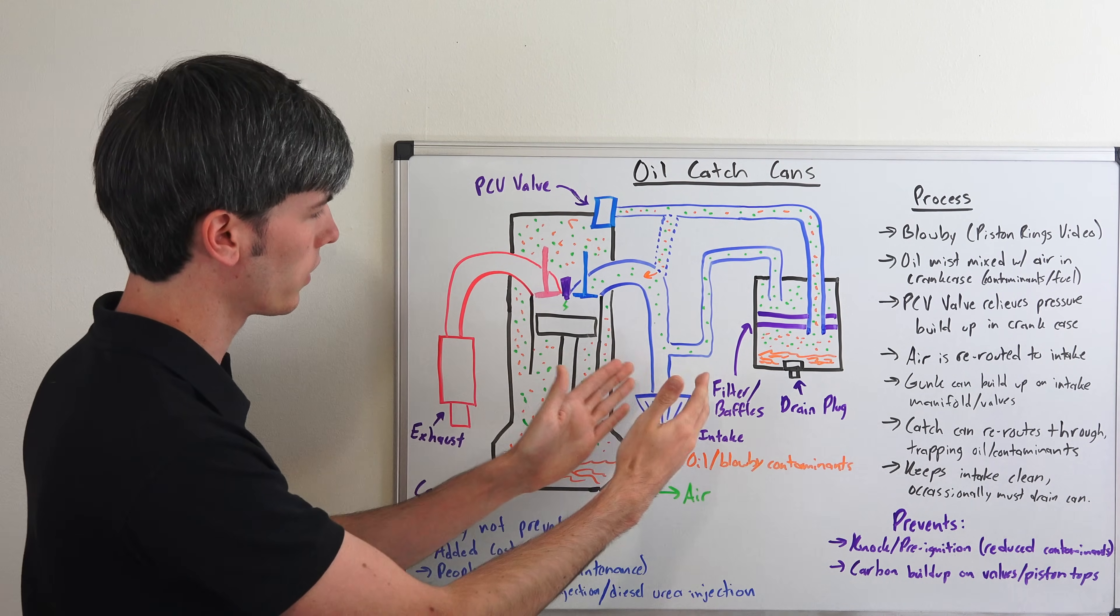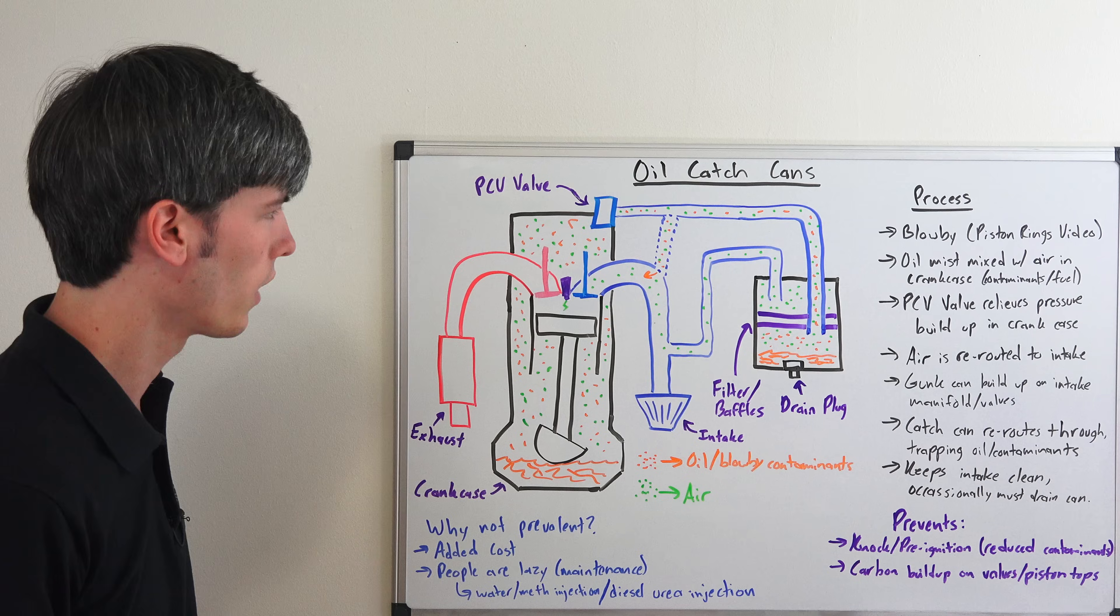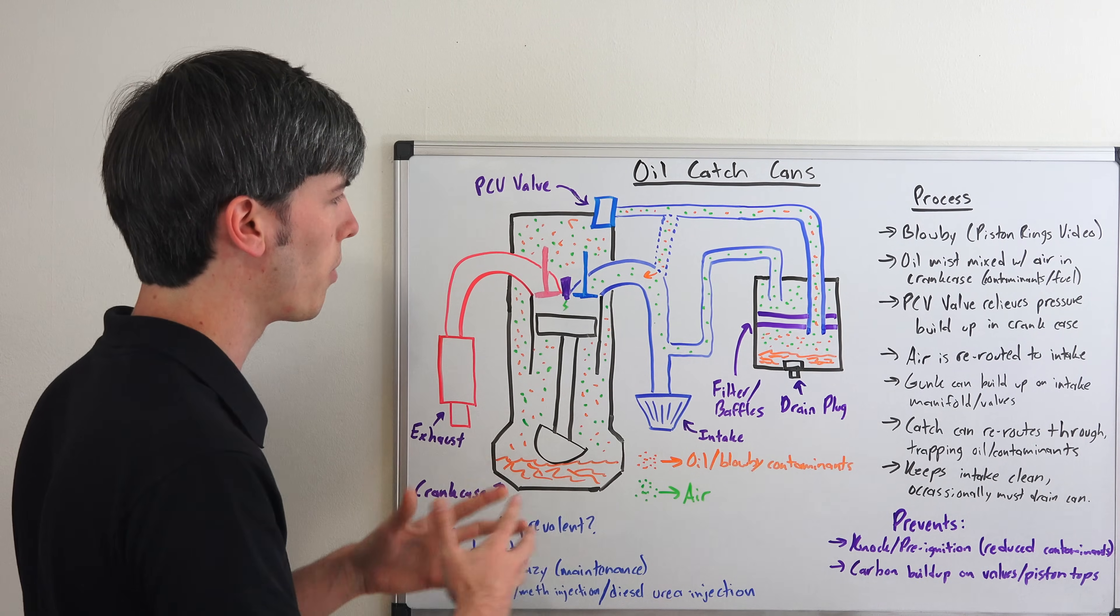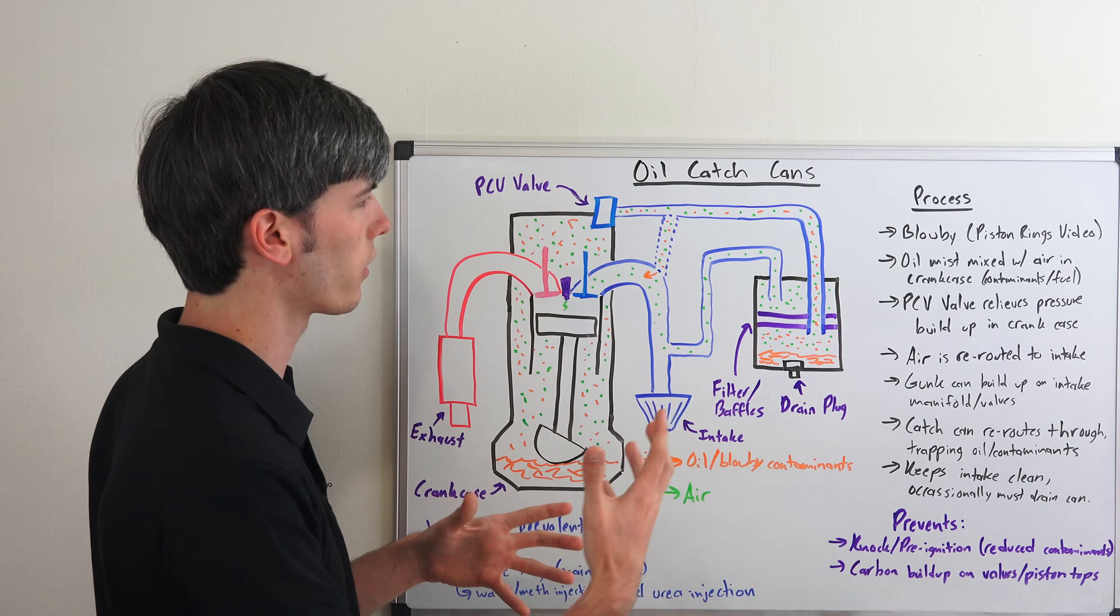We've got the exhaust on one side, the intake on the other. In order to talk about oil catch cans, we need to understand blow-by. For a greater explanation of how this actually works, I have a video on piston rings which I get into great detail.